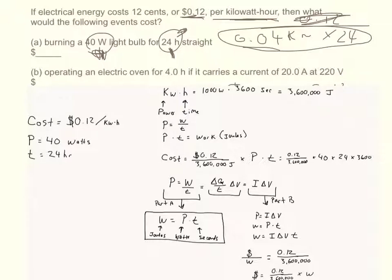The next problem says if you're operating an electric oven for four hours and it carries a current of 20 amps, what's it going to cost? You have to get to work.